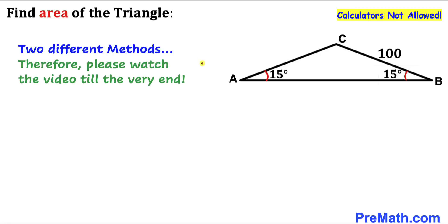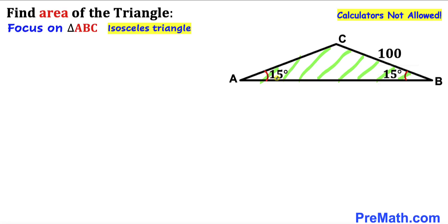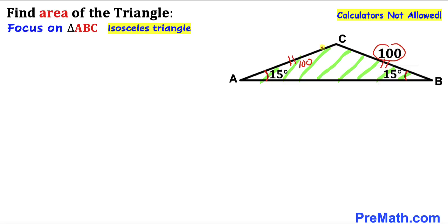Let's get started. I'm going to share two different approaches, so please watch the video till the very end. For our first step, let's focus on triangle ABC. This is an isosceles triangle since angle ABC is congruent to angle BAC, so side length BC equals side length AC. If BC is 100, then AC is 100 units as well.